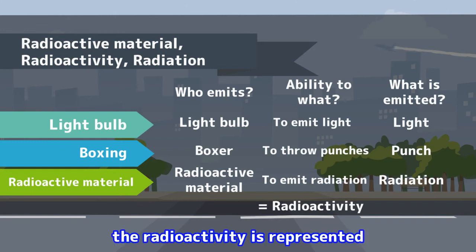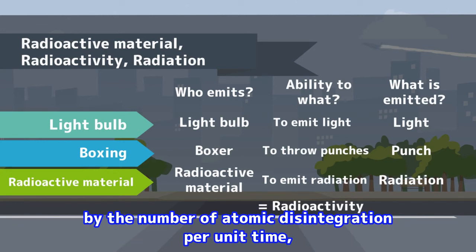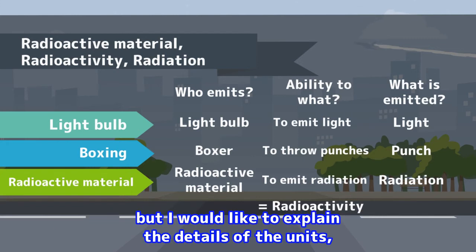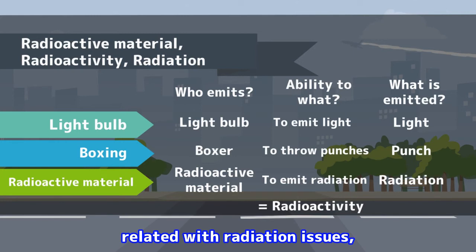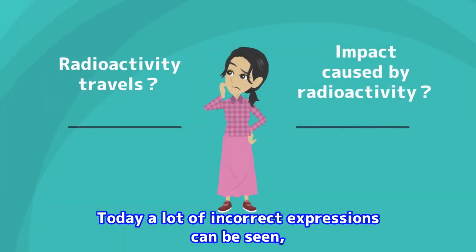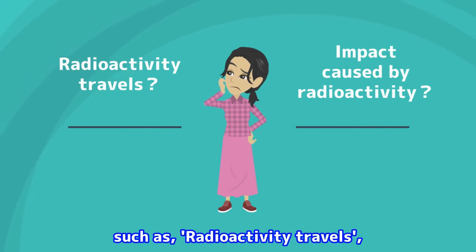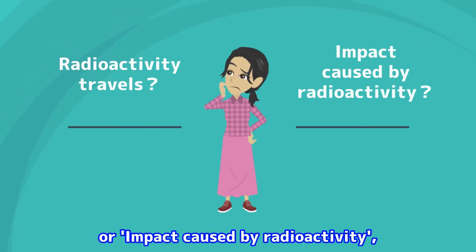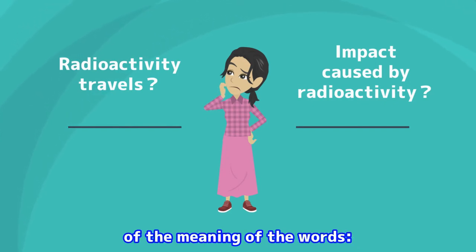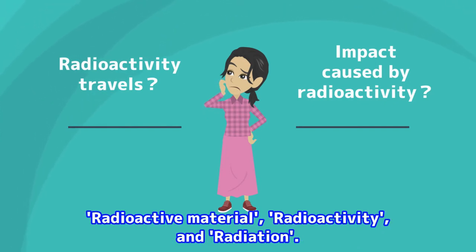Radioactive material has an ability to emit radiation, and this ability is called radioactivity. To be exact, the radioactivity is represented by the number of atomic disintegration per unit time. I would like to explain the details of the units related with radiation issues in other lectures. Today, a lot of incorrect expressions can be seen, such as 'radioactivity travels' or 'impact caused by radioactivity,' due to the misunderstanding of the meaning of the words radioactive material, radioactivity, and radiation.